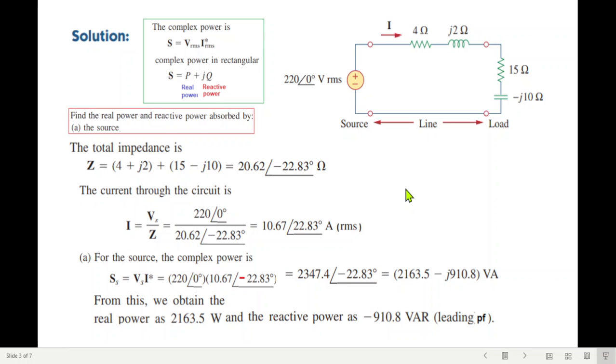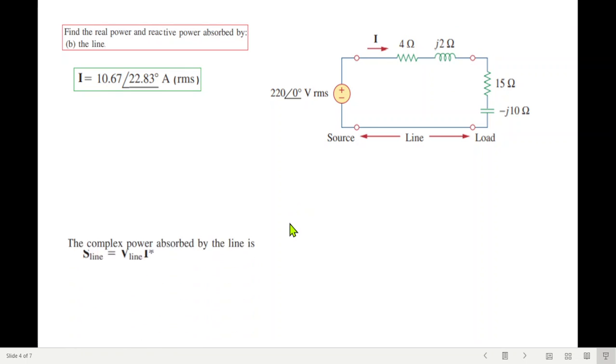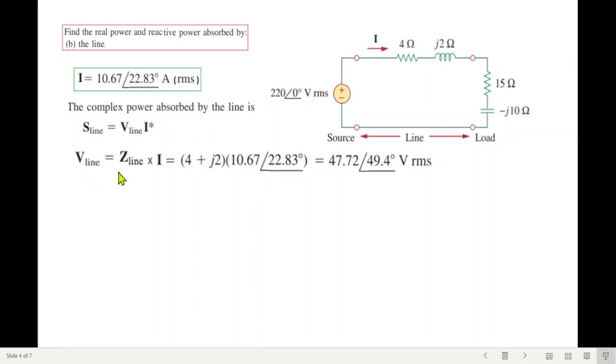For part B, we calculate exactly the same technique. Total current we know, line impedance we know, so we find the line voltage using complex power. The formula is V line into I conjugate. I we already know, V line we calculate using I into Z. So V line equals Z line into I.